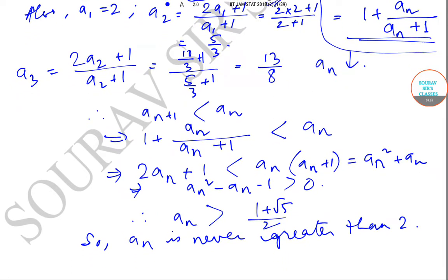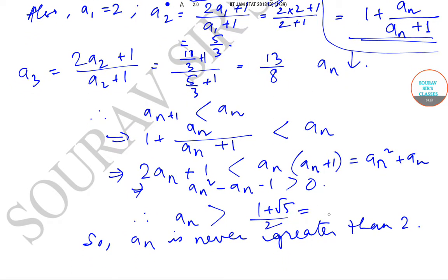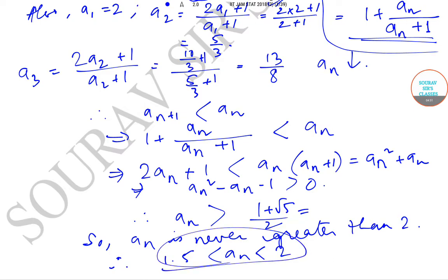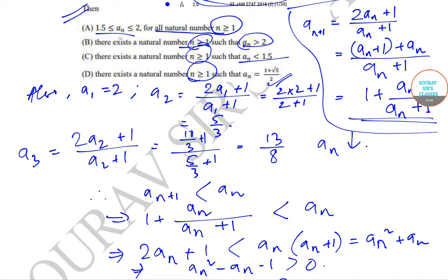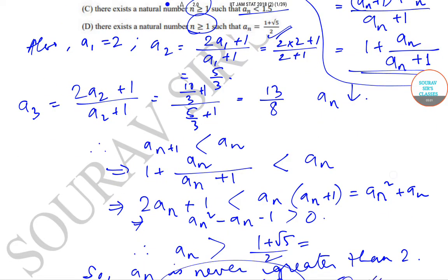So this will be somewhere around 1 plus something divided by 2, that is approximately 1.75. As you can see, a_n will never be greater than 2, and will be somewhere between 1.5 and 2. This implies that option A is the correct option, as option A states that a_n lies within 1.5 to 2.